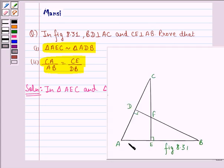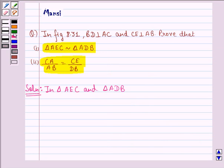First of all we see that angle A is common in both the triangles. So first thing is that angle A is equal to angle A because that is a common angle.